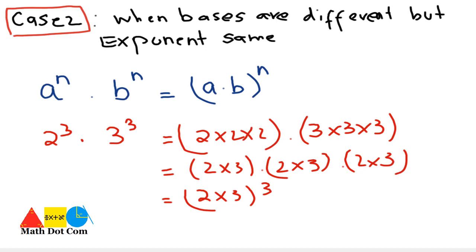One more example: 5 raised to power 2 and 3 raised to power 2 can be written as 5 raised to power 2. We have now dealt with both cases and how to find the product of two exponential numbers.